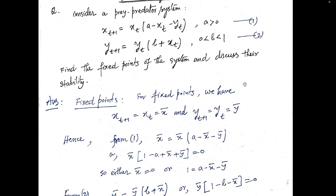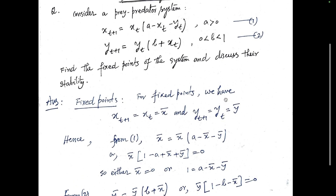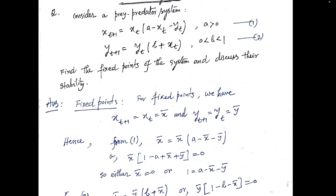For fixed points, equilibrium points, or critical points, we set x(t+1) = x(t) = x̄ and y(t+1) = y(t) = ȳ. Substituting x̄ for x(t+1) and x(t), and ȳ for y(t), from equation one we get: x̄ = x̄[a - x̄ - ȳ], so taking x̄ common, we get x̄[1 - a + x̄ + ȳ] = 0.